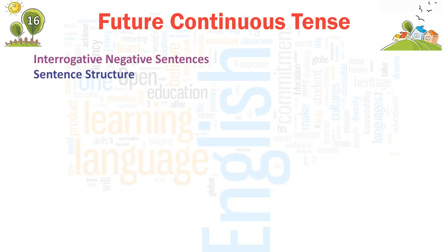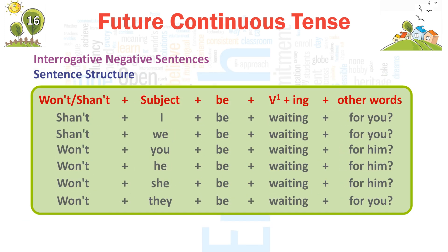Interrogative Negative Sentences. Sentence Structure: Won't/Shan't + subject + be + verb(-ing) + other words. Shan't + I + be + waiting + for you? Shan't + we + be + waiting + for you? Won't + you + be + waiting + for him? → 'Won't you be waiting for him?'